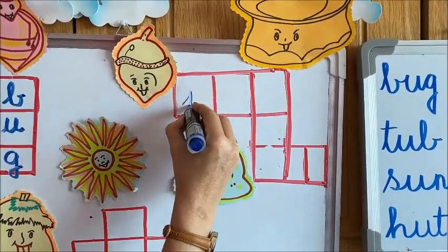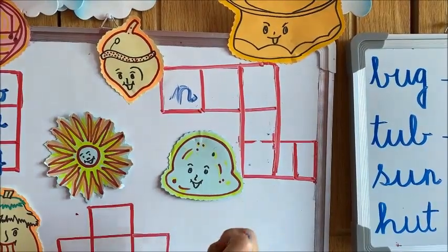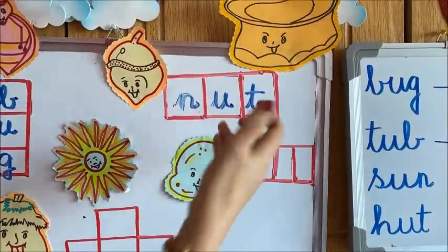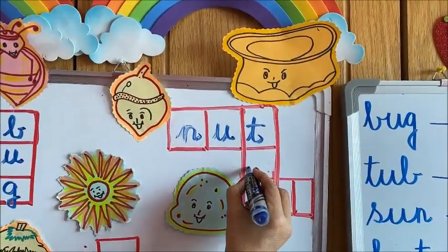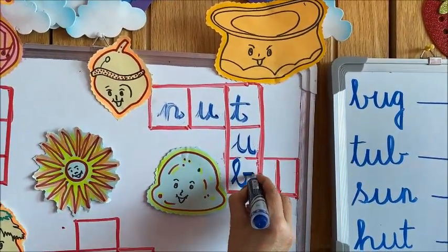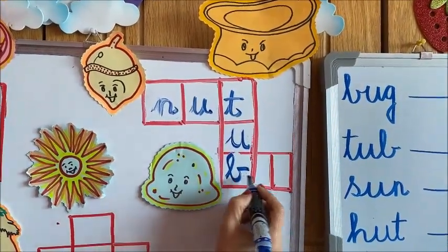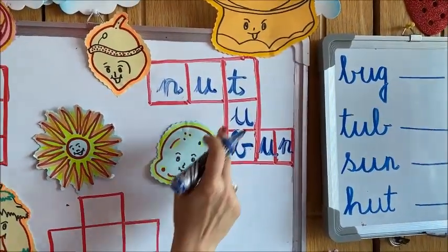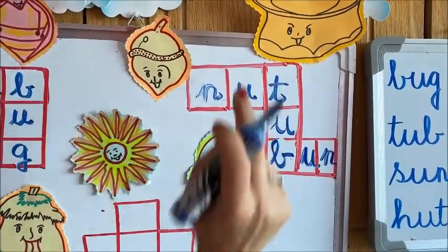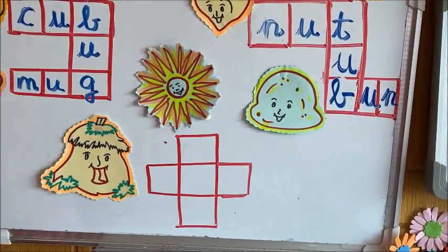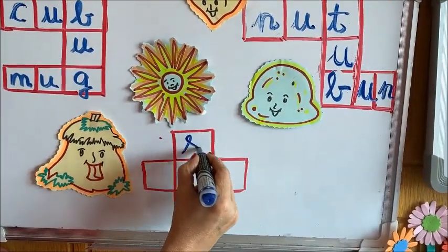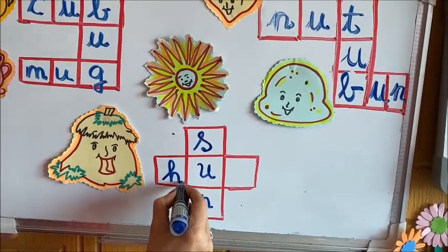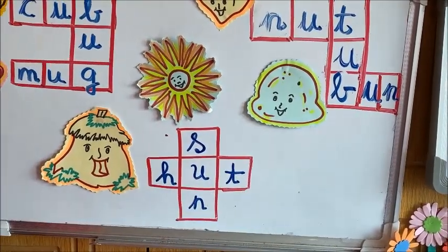Here we have another one. This is Nut: N-U-T, Nut. And this is Tub: T-U-B. And this is Bun: B-U-N. See if it is correct — Bun, Tub, and Nut. And this is a simple one. This is Sun: S-U-N, Sun. And this is Hut: H-U-T, Hut.